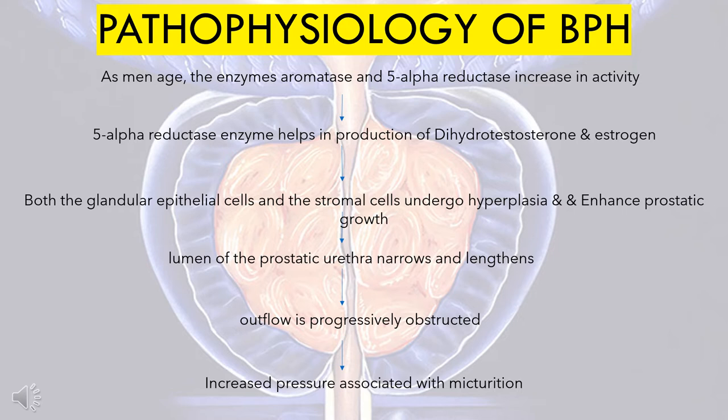Gradually, the lumen of the prostatic urethra narrows and lengthens, which results in progressive outflow obstruction and increased pressure associated with micturition.